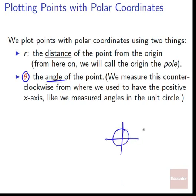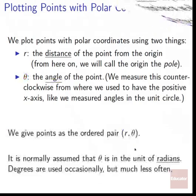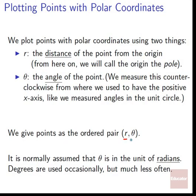On the unit circle, we always measured angles by going counterclockwise from that positive x-axis. We give points as the ordered pair R, theta — distance first, then angle. It's normally assumed that theta is going to be in the unit of radians. Degrees are used occasionally in polar coordinates, but much less often. Unless you see a degree symbol, just assume it's radians.